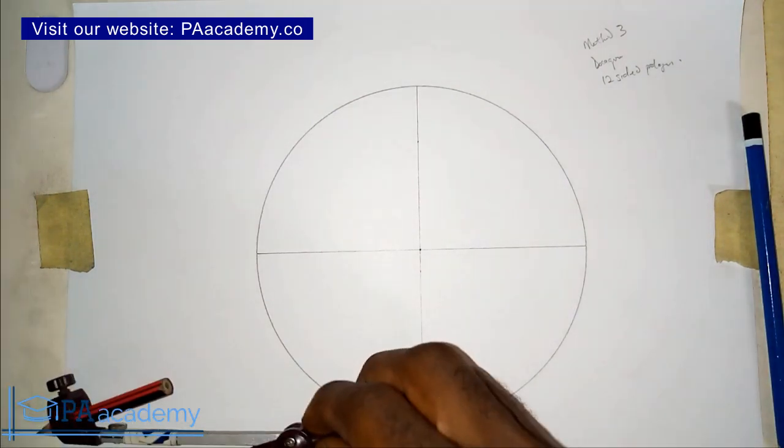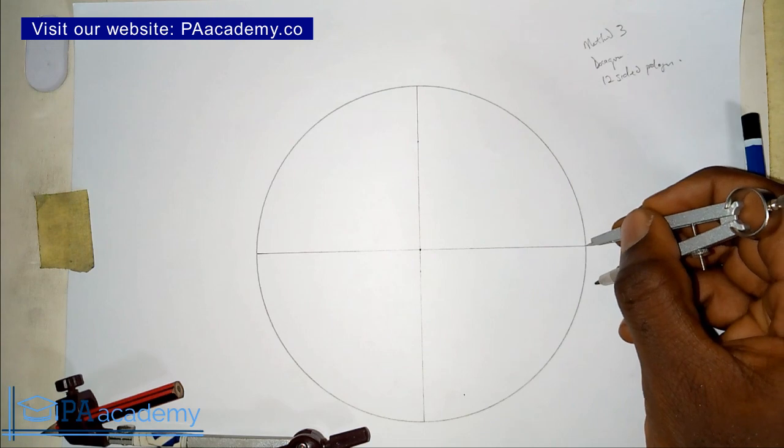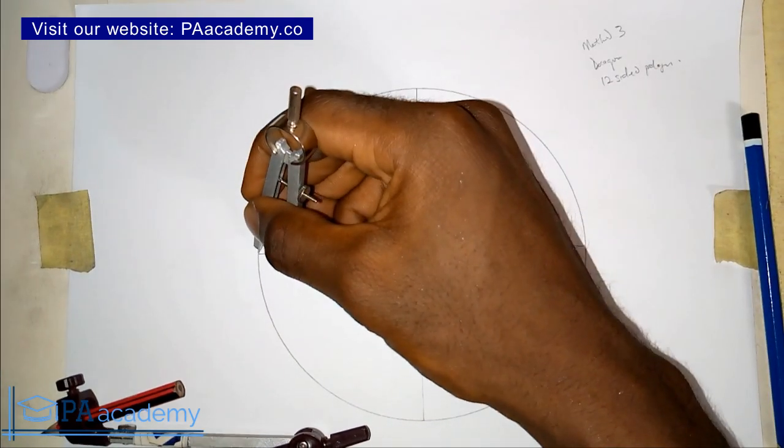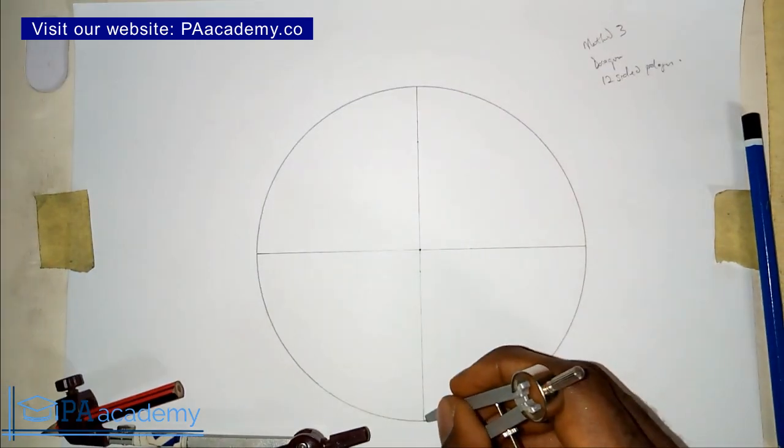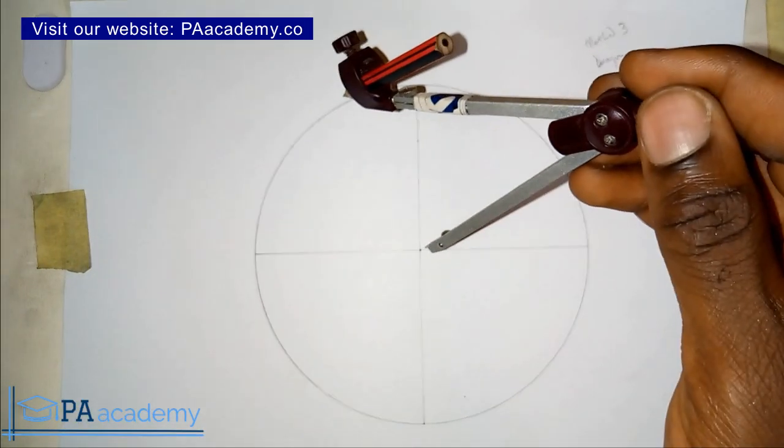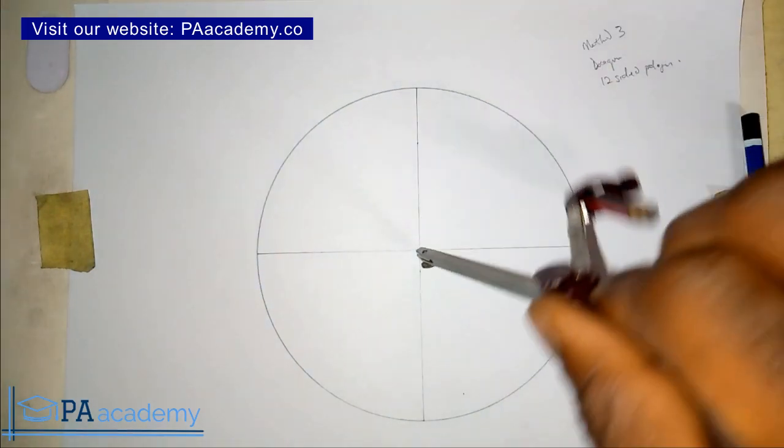The next thing you have to do is note the points where these lines are touching the circumference of the circle, where the diameter is touching the circumference of the circle. Just note them. Now you bring in your compass again with the same length you used to draw your circle.